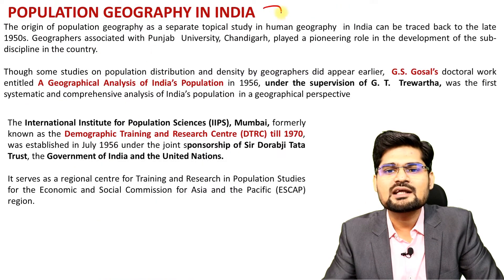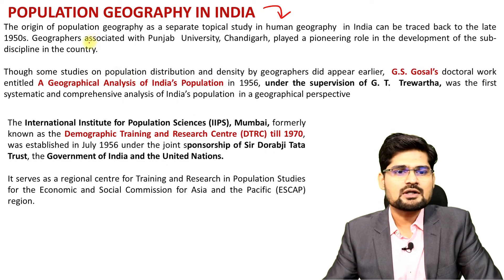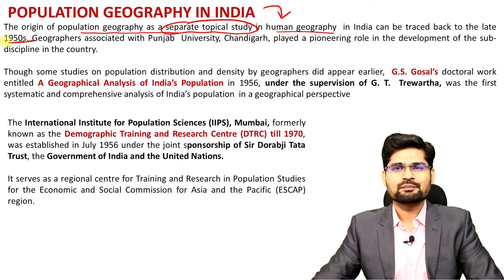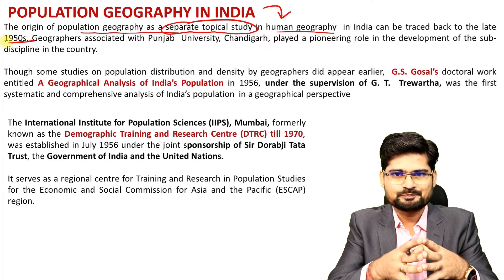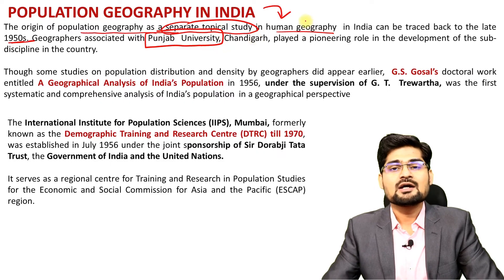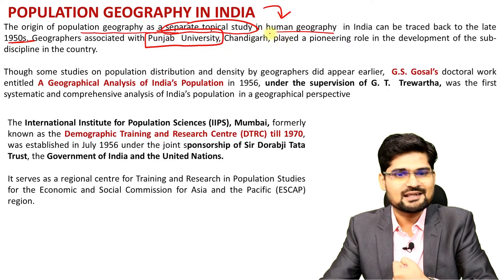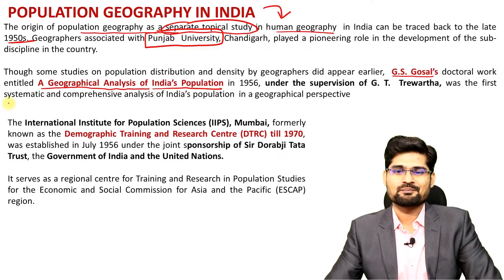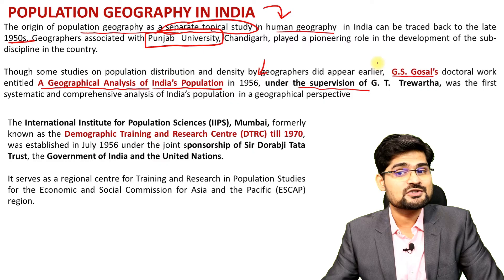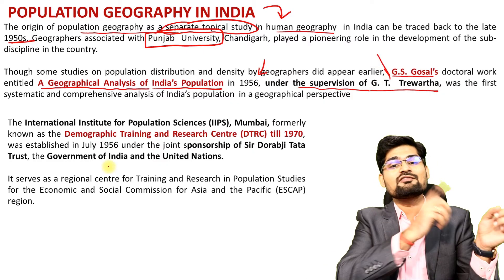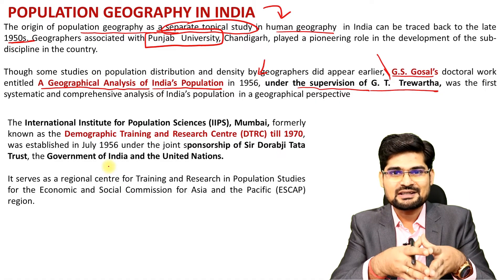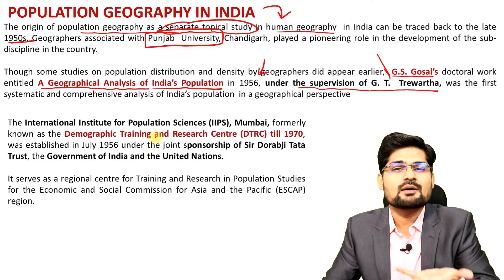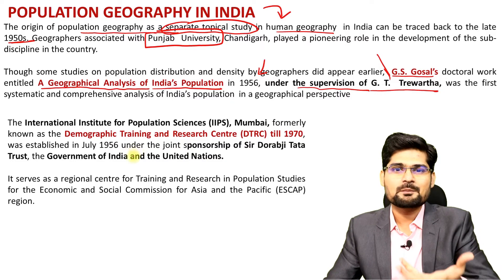Regarding population geography in India, the origin of population geography as a separate topical study in human geography in India can be traced back to the 1950s. Before 1950s, population geography was not popular in India. Geographers associated with Punjab University — specifically in Chandigarh — are supposed to be the pioneers of population research in India. G.S. Gosal's work, a doctoral thesis called 'A Geographical Analysis of India's Population,' was published in 1956 and was done under the supervision of G.T. Trewartha himself. So Trewartha, being a kind of father of modern population geography, and his disciple G.S. Gosal, who writes this Ph.D. work — it becomes the foundation stone. Punjab University is credited in India as the pioneer of population geography.